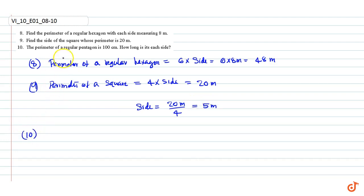Question 10: The perimeter of a regular pentagon is 100 centimeters. How long is each side? We know that a regular pentagon has five sides, so the perimeter of a regular pentagon equals 5 × side.